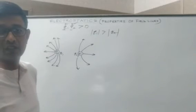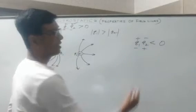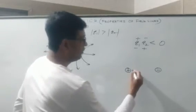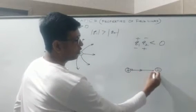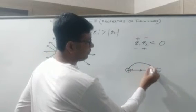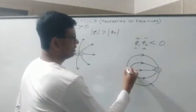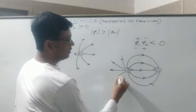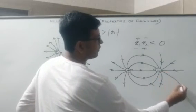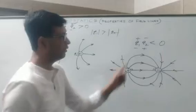Now let's plot the diagram for q1 times q2 less than zero. This is possible only when the two charges are unlike — one positive and one negative. The field lines will emanate from the positive charge and terminate at the negative charge. Make sure that the field lines emanate or terminate always on the surface of the charged body at right angles.